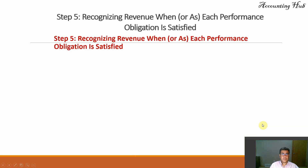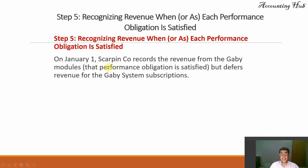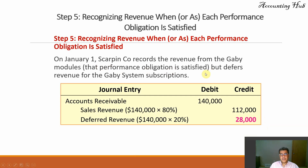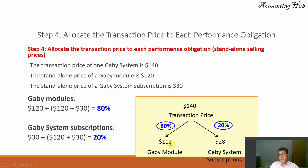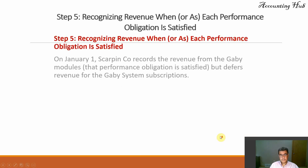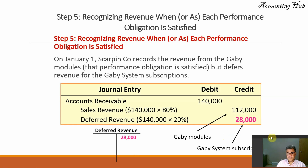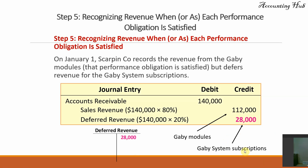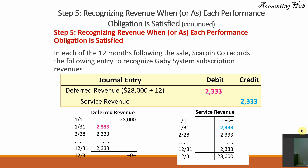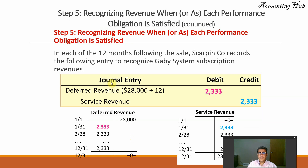Let's record it. Recognize revenue when each performance obligation is satisfied. On January 1st, record the revenue from the Gabby modules, but defer the revenue from the Gabby system subscription. So: accounts receivable $140,000; sales revenue — the 80% of $140,000 — is $112,000; and deferred revenue — the $28,000. Then, over each of the 12 months, deferred revenue $28,000 divided by 12 equals $2,333.33.